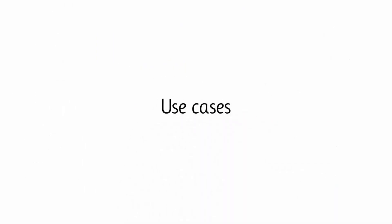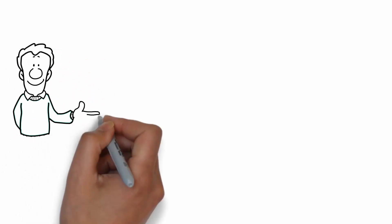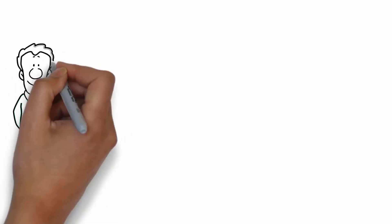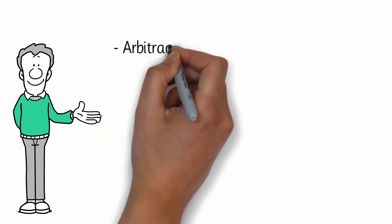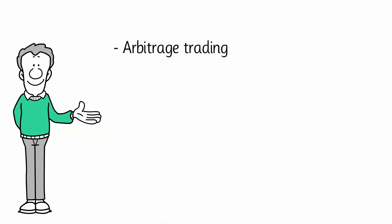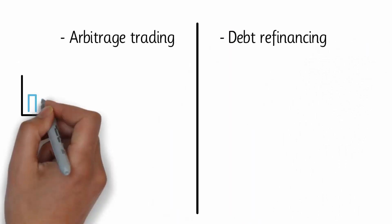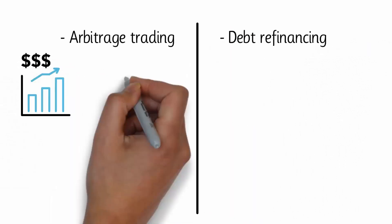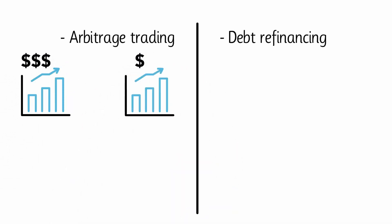Use cases. With the previous explanation in mind, it becomes obvious that flash loans are designed for quick actions. One of these is arbitrage trading. Traders can make money with flash loans by capitalizing on the price difference of an asset across multiple exchanges.